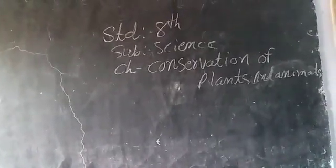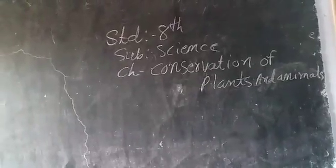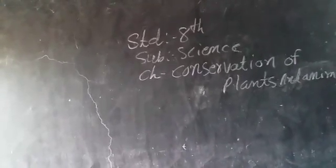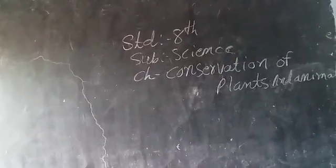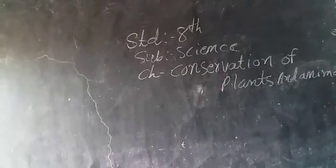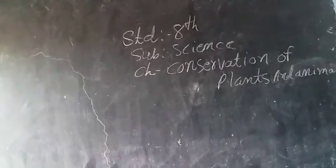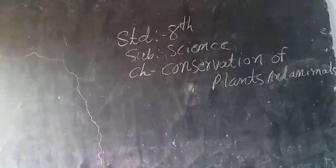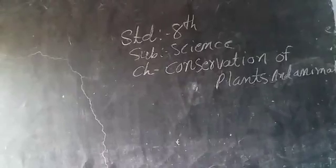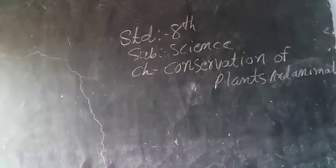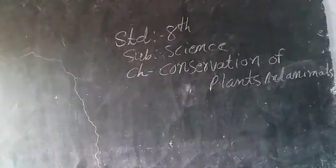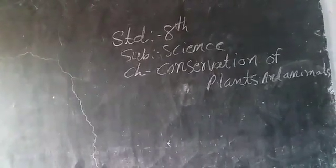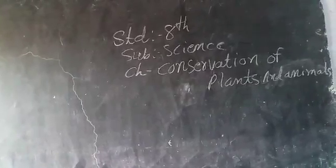Question 3: Explain how deforestation leads to desertification. Answer: Deforestation leads to changes in soil properties. Fewer trees result in more soil erosion. Removal of the top layer of the soil exposes the lower hard and rocky layers. This soil has less humus and is less fertile. Gradually, the fertile land gets converted into desert. Thus, deforestation leads to desertification.